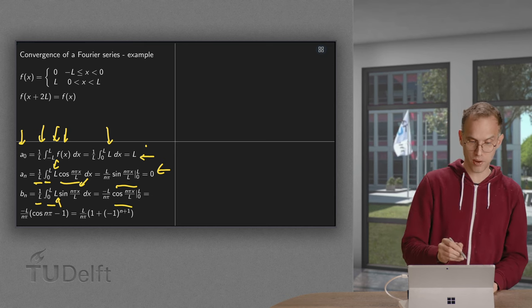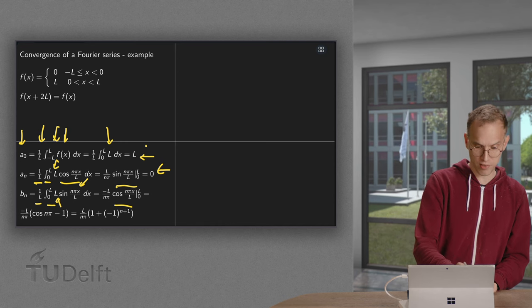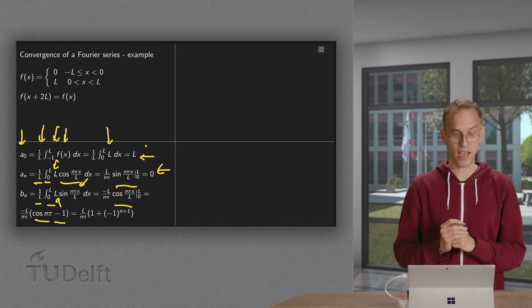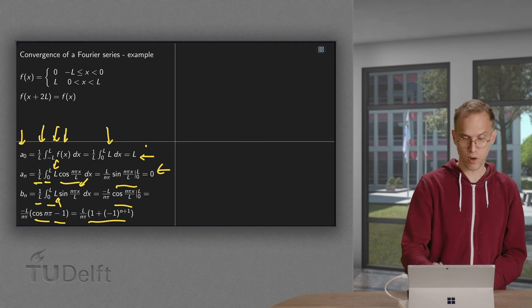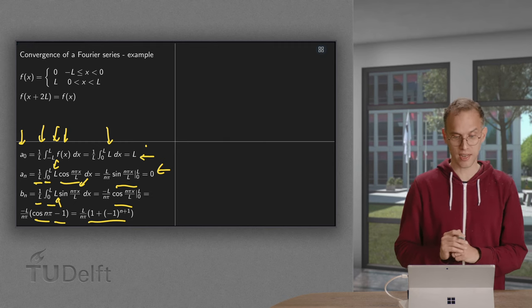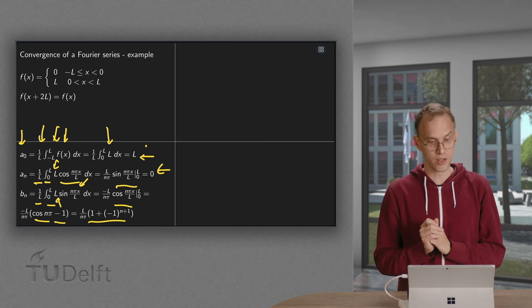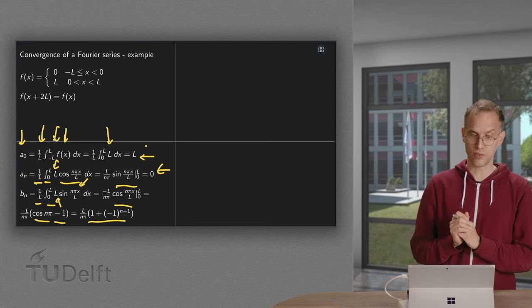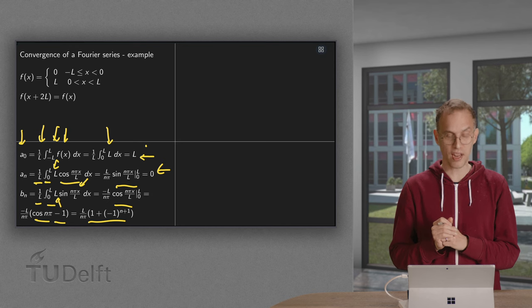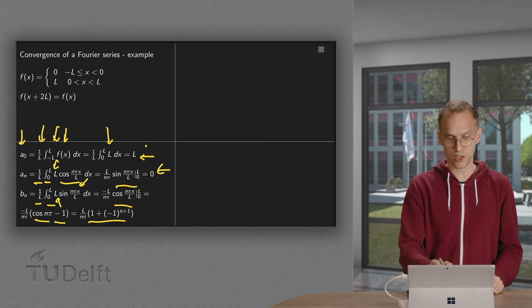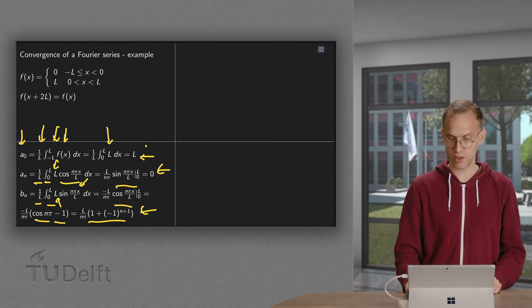Plug in the boundaries. On the upper boundary we get a cosine n pi, on the lower boundary we get a 1, so cosine n pi minus 1, or 1 plus (-1)ⁿ⁺¹. And you already see that for an odd n, this will give us a 2, and for even n we will have a 0. But we can just leave the bₙs as is over here as well.